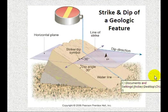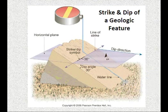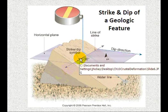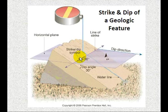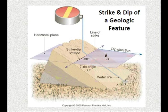The dip angle is always measured perpendicular to the strike, in other words at 90 degrees. So the dip perpendicular to the strike is 30 degrees in that given direction. That's referred to as the strike and dip of a geologic feature. We can see this done on faults, on tilted beds, and on folds. That's basically how geologists use that information, and you'll see an example of that here in a moment.